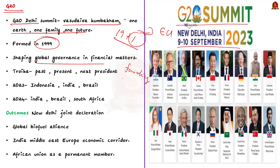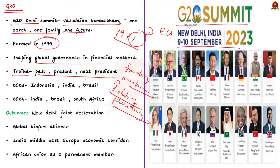G20 summits are held annually under the leadership of a rotating presidency, supported by the troika — the current, previous, and incoming presidency. In 2023, the troika consisted of India, Indonesia, and Brazil. For 2024, it will be Brazil, India, and South Africa. The summit has two parallel tracks: the financial track and the Sherpa track. Importantly, the G20 does not have any permanent secretariat or staff.